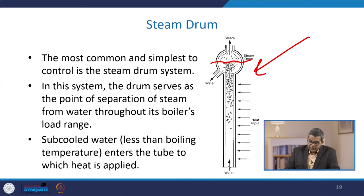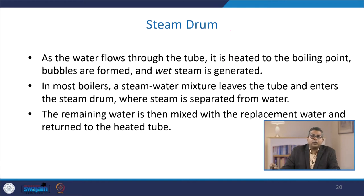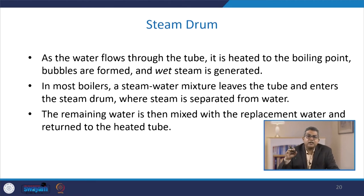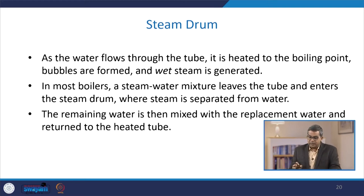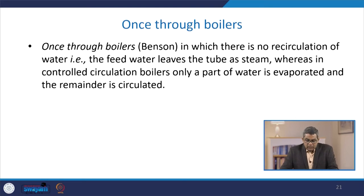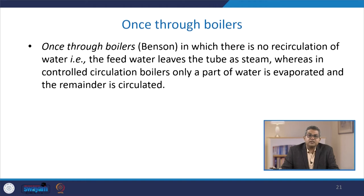Sub-cooled water at less than boiling temperature enters the tube to which heat is applied. As water flows through the tube, it is heated to the boiling point, bubbles are formed, and wet steam is generated. In most boilers, the steam-water mixture leaves the tube and enters the steam drum where steam is separated from water. The remaining water is then mixed with replacement water and returned to the heated tube. In once-through boilers such as the Benson boiler, there is no recirculation of water — the feed water leaves the tube as steam.